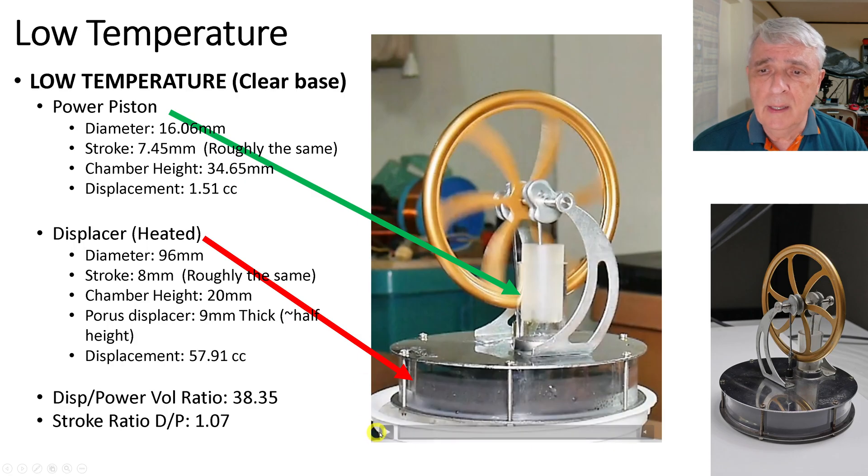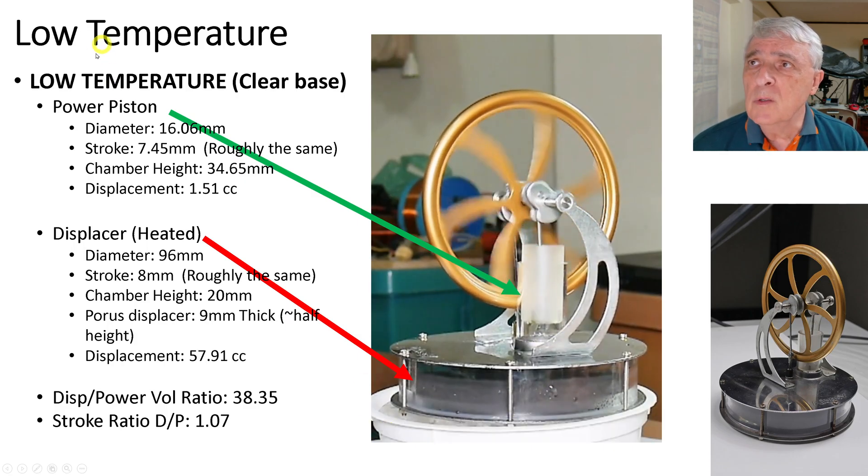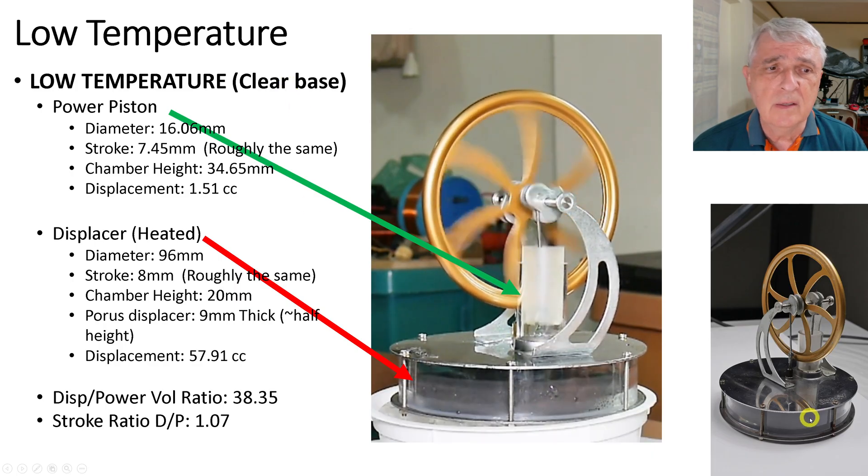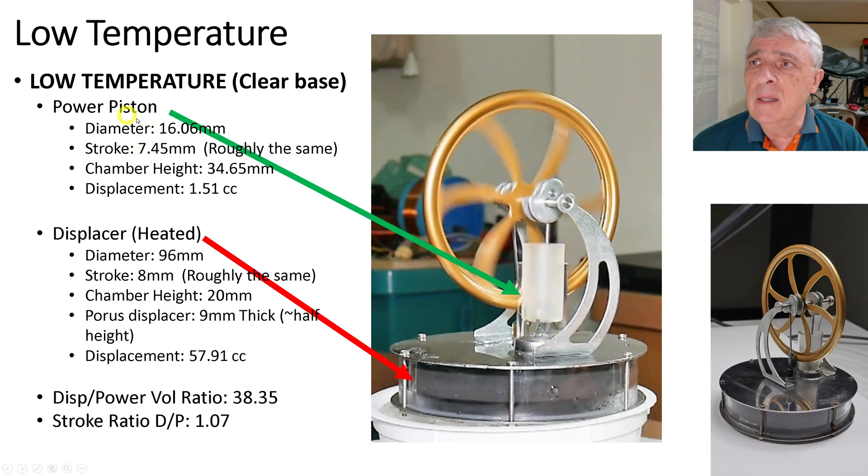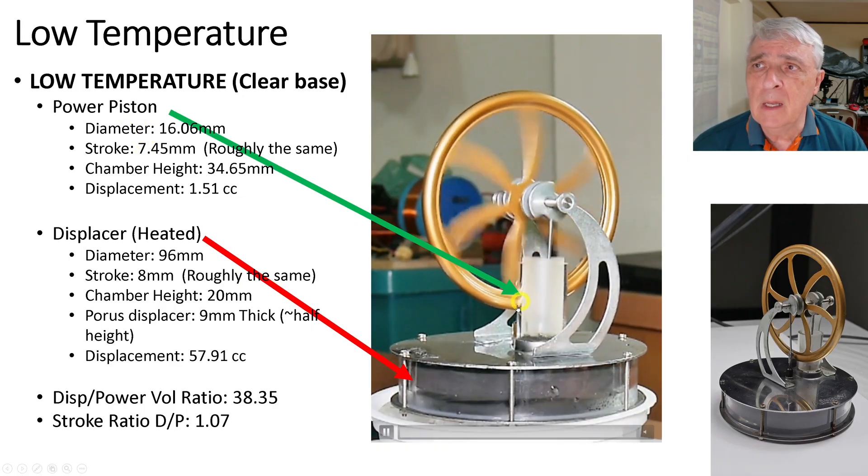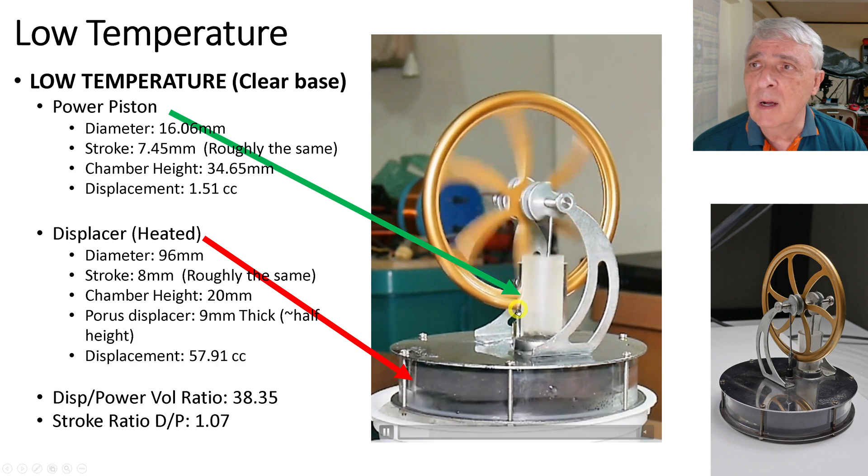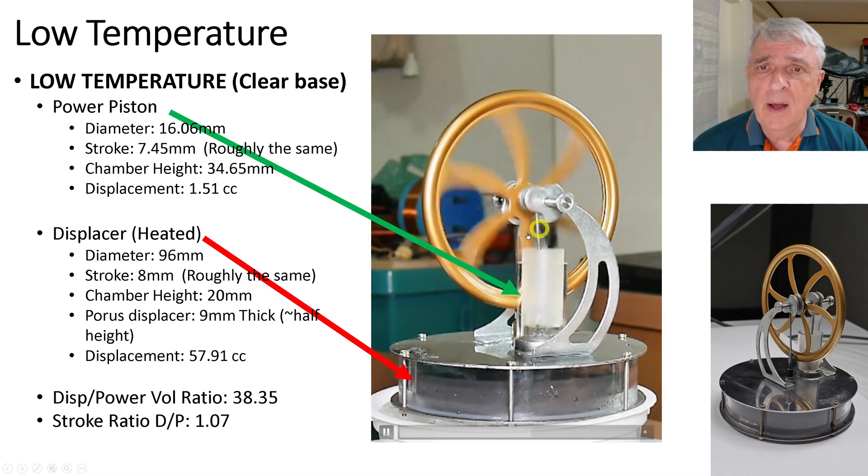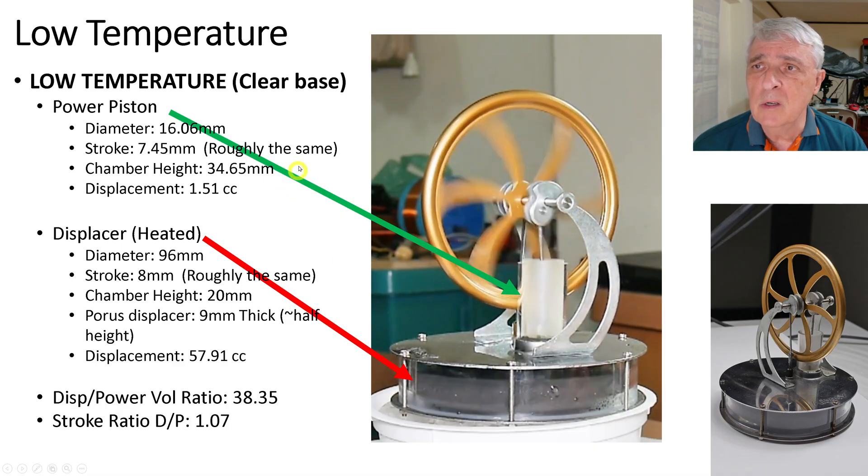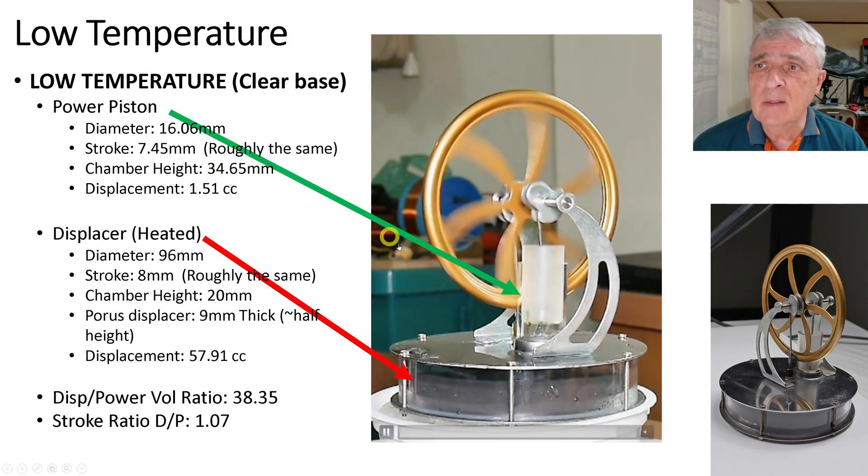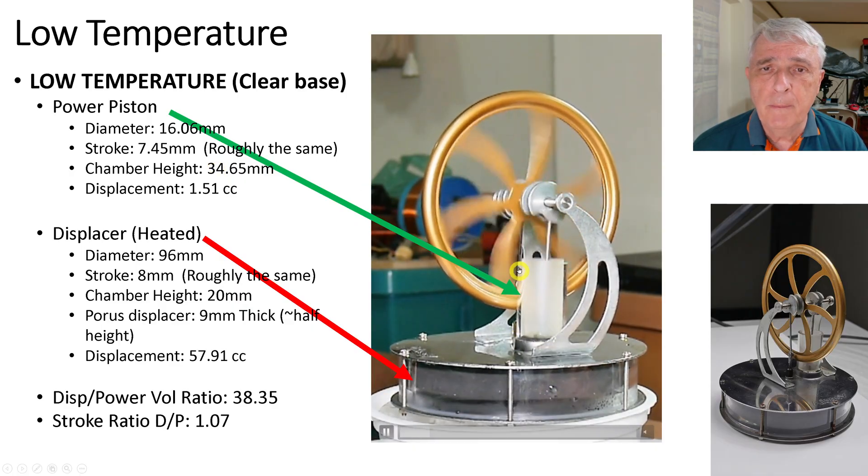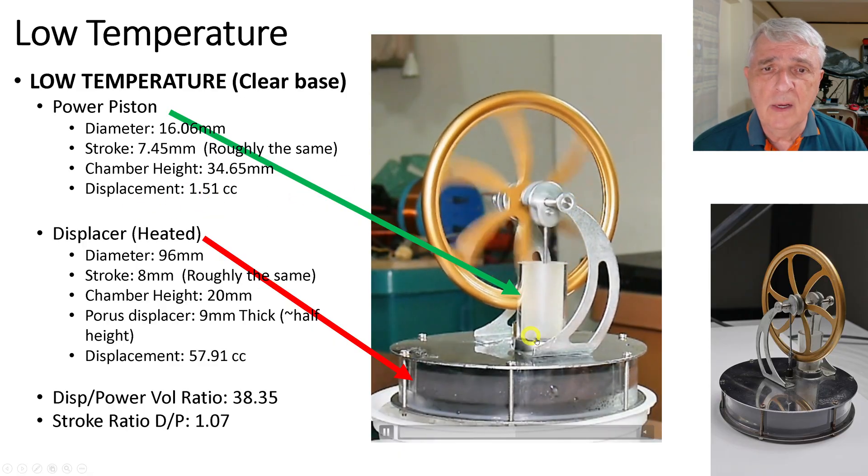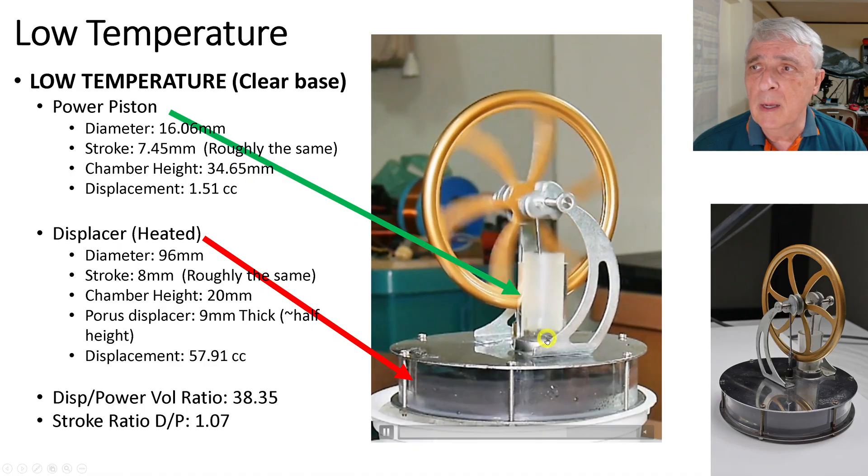The first one is a low temperature, and I call it the clear base. The power piston, which is this piece up here, the diameter across is 16.06 millimeters. The stroke is 7.45, which is roughly the same as the displacer. The chamber height is 34.65 millimeters, so that's from here up to here. And the displacement is 1.51 cc, so that's this volume down here you see opening and closing.